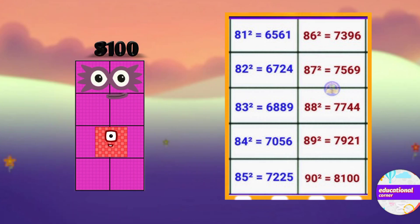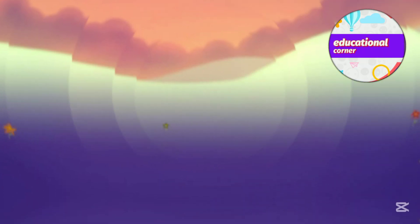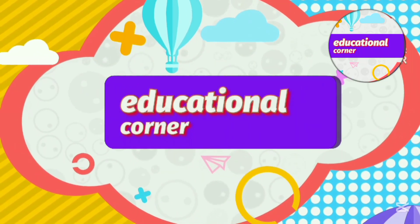The square of 90 is 8100. Hope you like the video, bye!